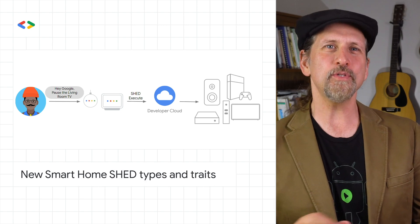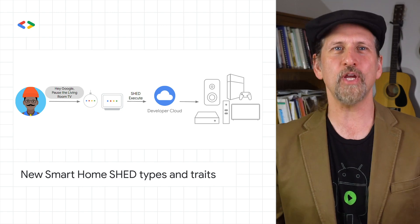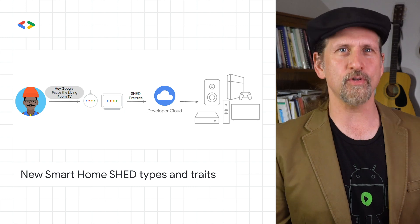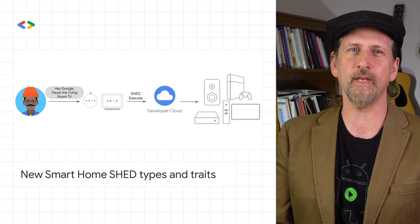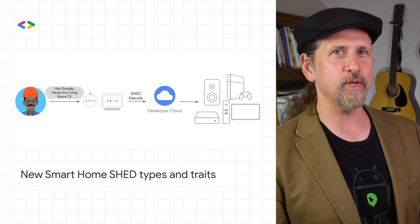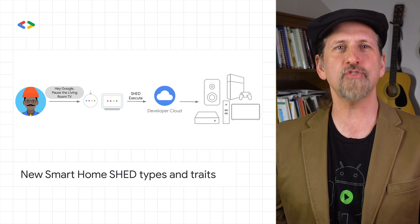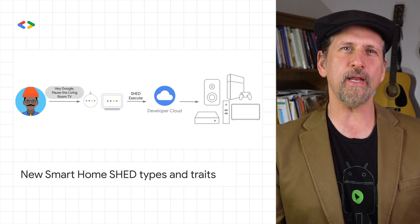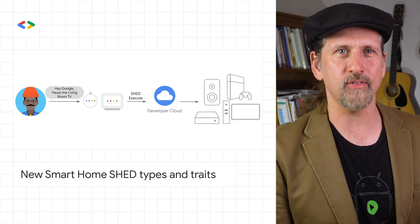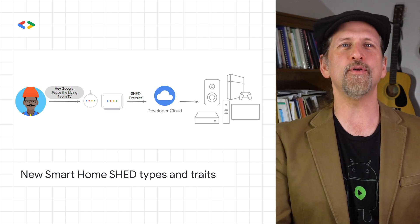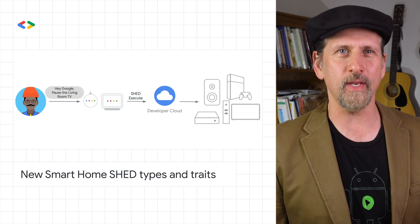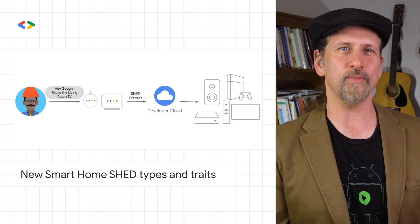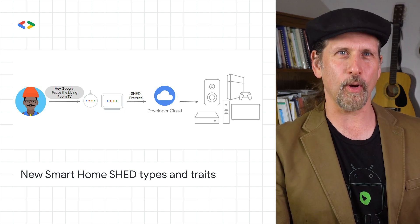We released new smart home entertainment device types and traits for Google Assistant, helping to build out a more complete solution for smart home media and gaming devices, including audio video receivers, streaming devices, sound bars, and speakers. By implementing these types and traits on your entertainment devices, you can enable users to fully access device and media controls from any Assistant surface. For more information, head on over to the post.